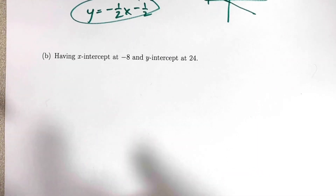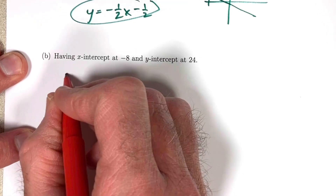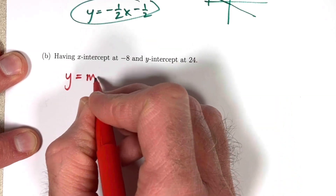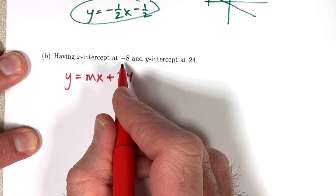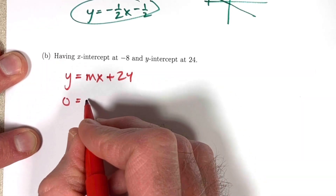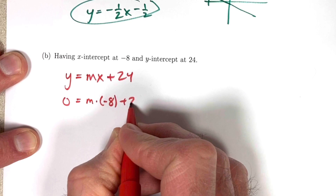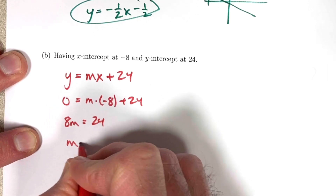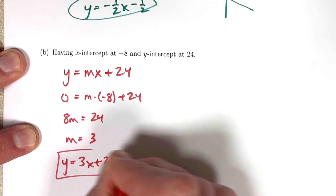Part B: find the equation of a line with x-intercept negative 8 and y-intercept 24. Starting with slope-intercept form y equals mx plus 24 and plugging in x equals negative 8, y equals 0: we get 0 equals negative 8m plus 24, so 8m equals 24 and m equals 3. The equation is y equals 3x plus 24.